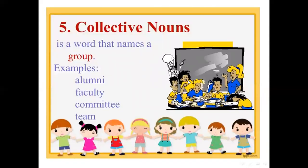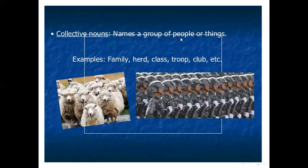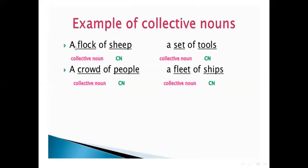Let's discuss more. A collective noun is a word that names a group, like faculty, committee, team. In a team, a lot of people are there, so we use just one word for a lot of people — that is called a collective noun. Collective nouns name a group of people or things, like family, herd, class, troop, club, etc. For example: a flock of sheep — 'flock' is the collective noun and 'sheep' is the common noun. A set of tools, a crowd of people, a fleet of ships.